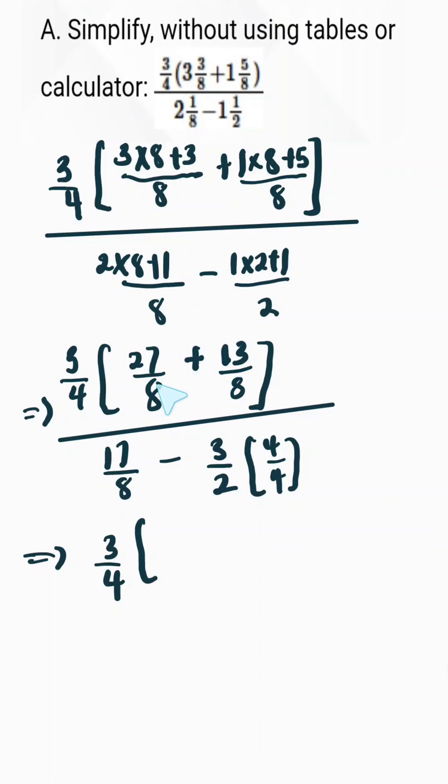So this is going to be 40 over 8 divided by 17 over 8 minus 12 over 8. Our objective from here is that we want to maintain the same denominator of 8. That's why we multiply by 8 over 8.